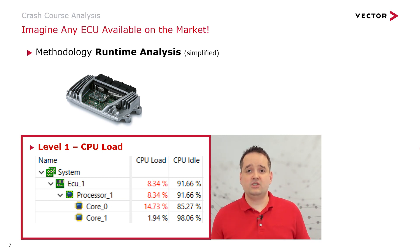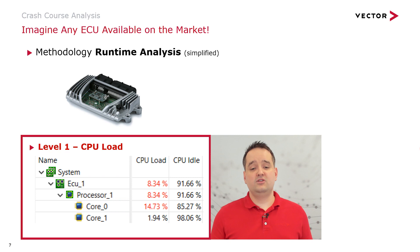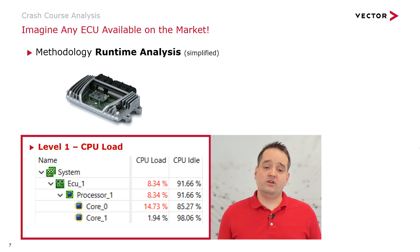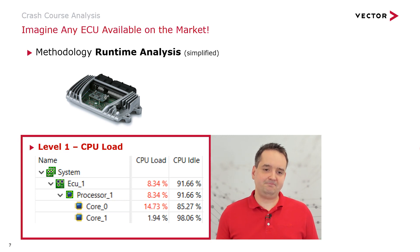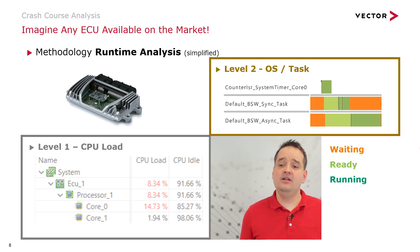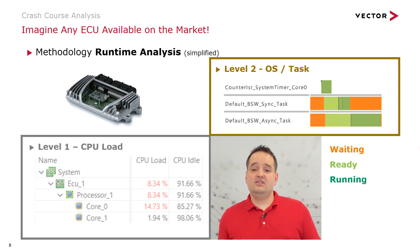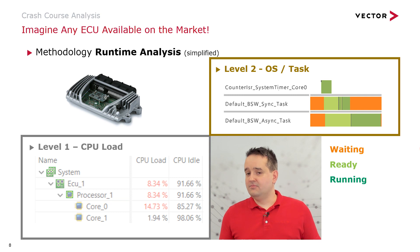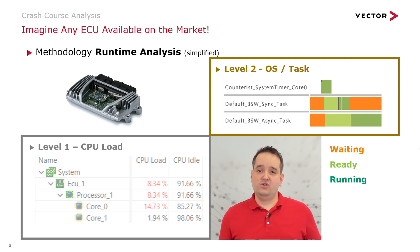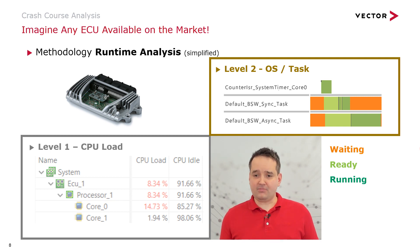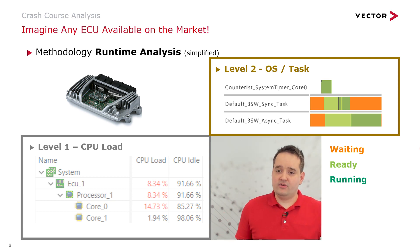For the rest of this presentation, let's define a level 1 analysis where we only investigate the CPU load. Using the Timing Architects tool suite, we can state that the ECU is a dual-core system with 14% CPU load on core 0 and core 1 running at almost 2%. At level 2, we gain information about the OS scheduler and task scheduling. Here you see a counter interrupt service routine and synchronous and asynchronous basic software tasks. Orange means the task is in the waiting state.